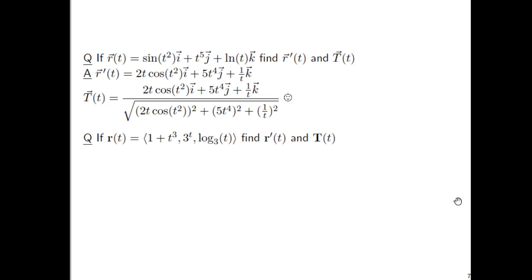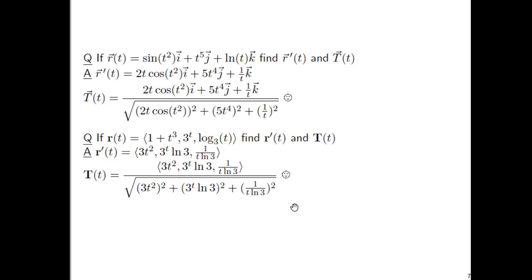If r(t) is equal to this vector function, let's find the derivative and the unit tangent vector. So again, just some derivative work. It's really just three separate derivatives for each of the three components. And then here's the unit tangent vector.